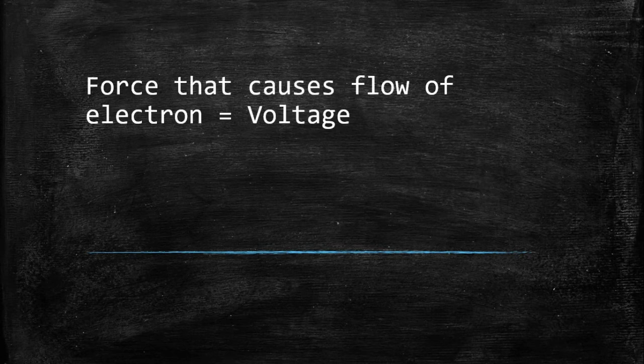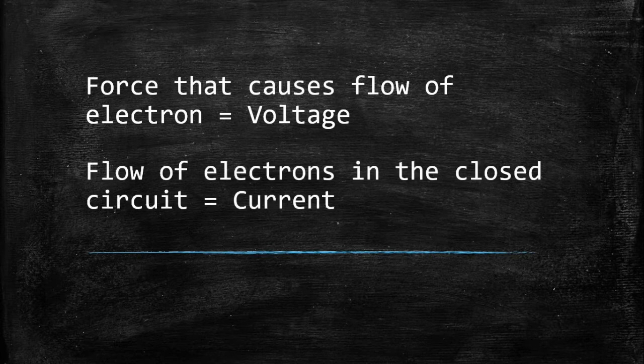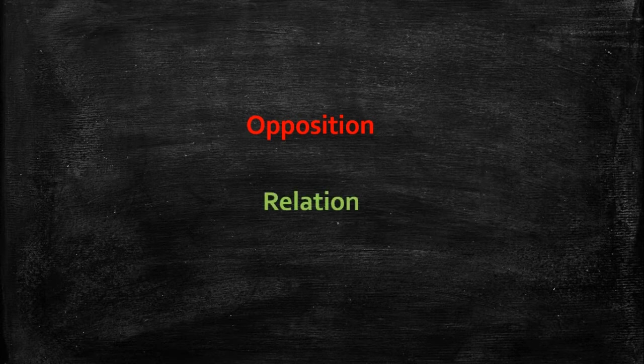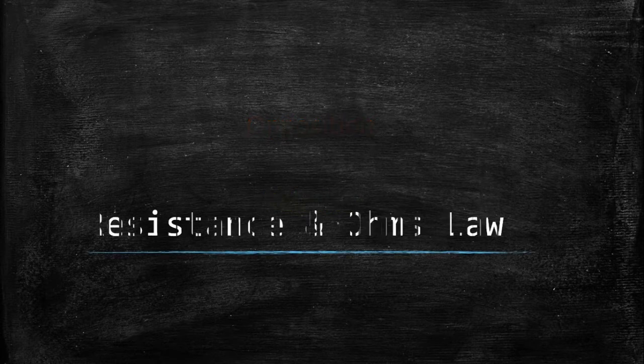In the previous video we saw that the force that causes the flow of electrons is called voltage, and the flow of electrons in a closed circuit is called current. Now the question is: when current flows in a closed path, is there any opposition offered to it, and is there any relationship between the voltage and current? If you want to get the answers, watch the video.